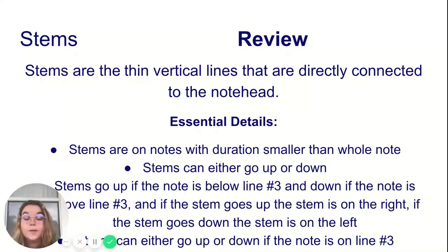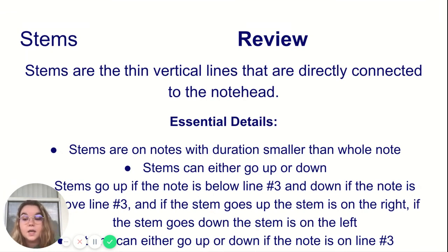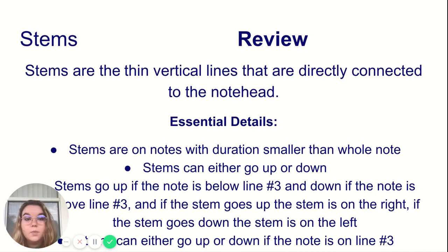Some essential details about stems: they are on notes with durations smaller than a whole note. They can go either up or down. They go up if the note is below line three, and down if the note is above line three. If the stem goes up, it is placed to the right of the note head. If the stem goes down, it is placed to the left of the note head. If the note is placed on line three, the stem can go either up or down — it just depends on what notes are around it.